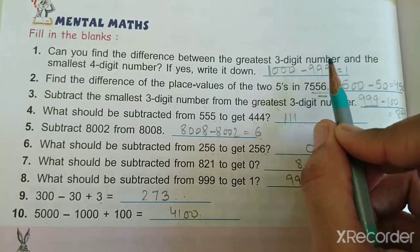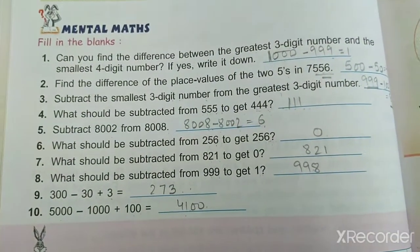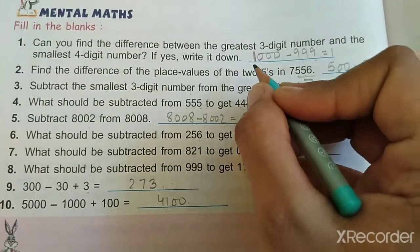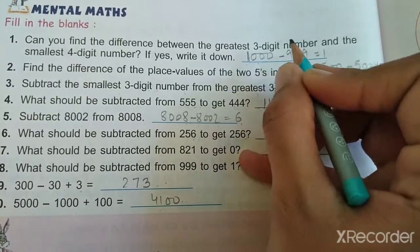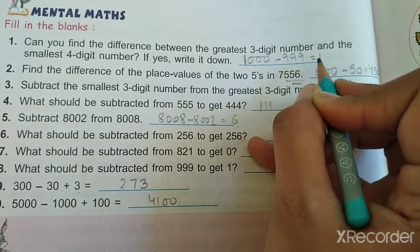The first question is: Can you find the difference between the greatest three-digit number and the smallest four-digit number? If yes, write it down. Everyone, the smallest four-digit number is 1000 and the greatest three-digit number is 999. So 1000 minus 999 is 1.